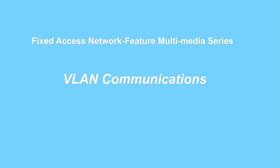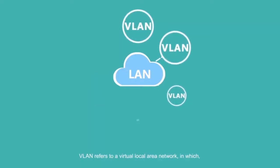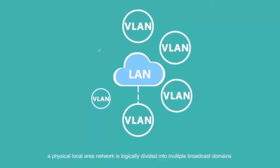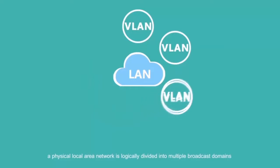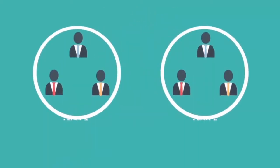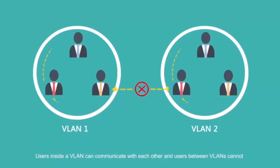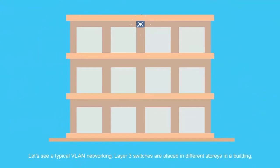VLAN Communications. VLAN refers to Virtual Local Area Network, in which a physical local area network is logically divided into multiple broadcast domains. Users inside a VLAN can communicate with each other, and users between VLANs cannot. Let's see a typical VLAN networking.